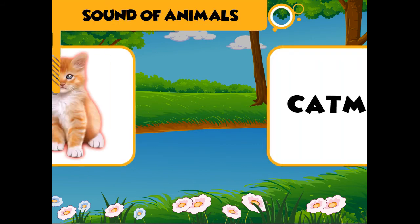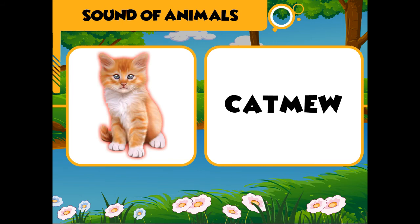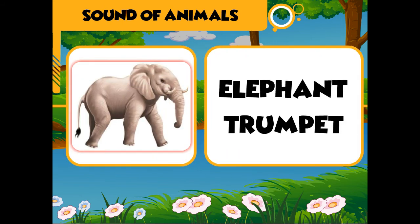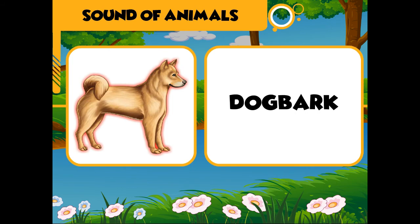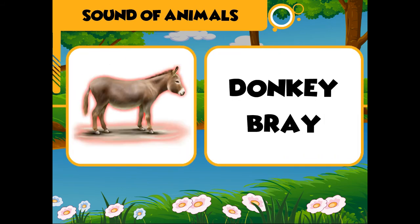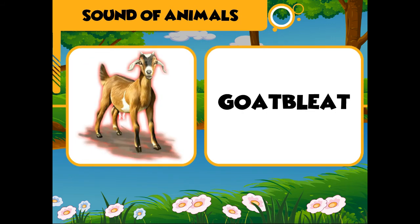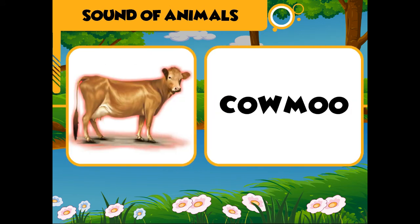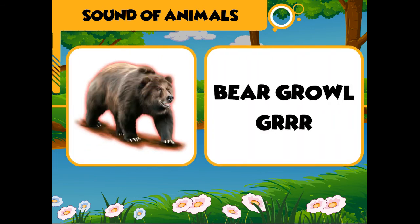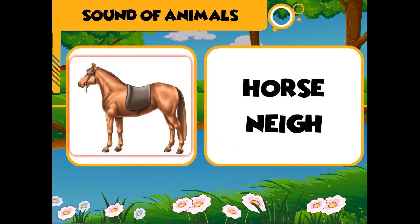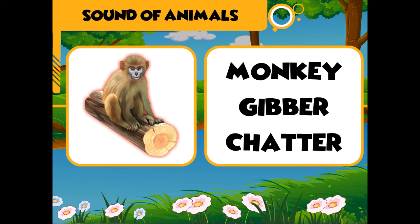Sound of animals: cat — mew, elephant — trumpet, dog — bark, donkey — bray, lion — roar, goat — bleat, cow — moo, bear — growl, horse — neigh, monkey — gibber/chatter.